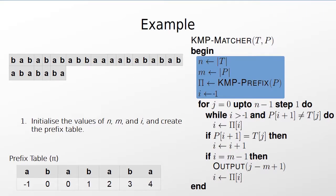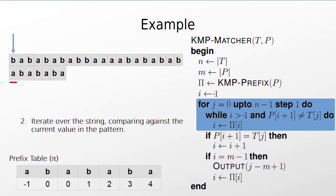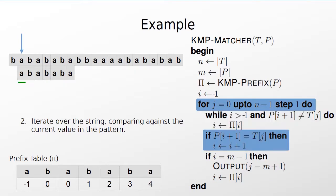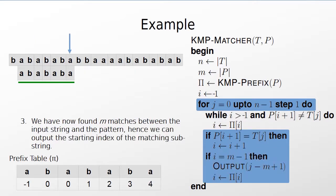Before we start iterating over the input string we initialise n, m, and i and create the prefix table. We then start iterating over the string. The first character is a mismatch but we cannot use the prefix table to skip backwards because we are still at the start of the string. Therefore, we move on to the next character in the input and compare it to the first character in the pattern. We have a match so we increment i. While the input string and pattern match we continue to increment i. We have now made m consecutive matches, meaning we have found the pattern in the input and can output its starting index. We also use the prefix table to set the value of i to the last point in the pattern we know has already been matched.